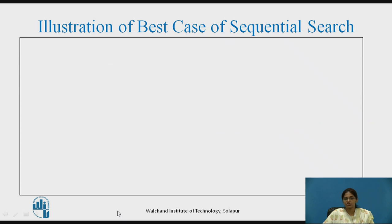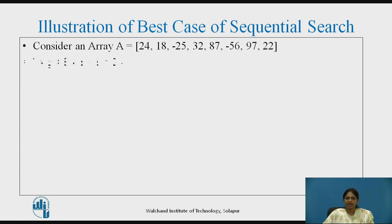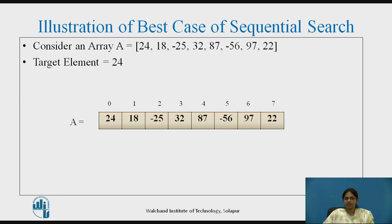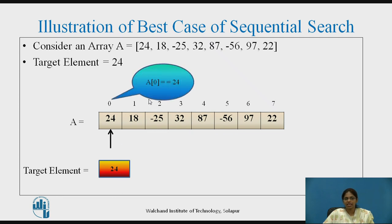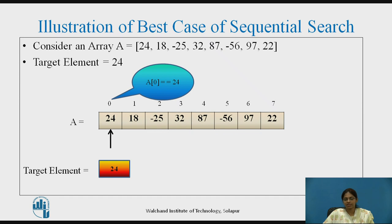Now let us see the best case of sequential search. Consider the same array and target element 24. The pointer is set at index 0. Comparing A[0] with 24 — A[0] equals 24, so the element is found at the very first position. This is the best case because in only one comparison the target element has been found. When the search completes with fewer comparisons, the best case is achieved.